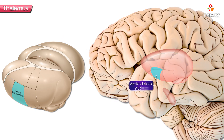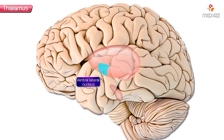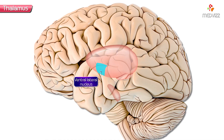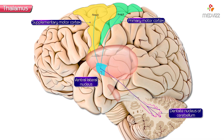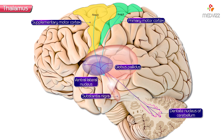Next is the ventral lateral nucleus. This ventral lateral nucleus relays information between the primary cortex and the supplementary motor cortex, and also the dentate nucleus of the cerebellum. It also receives inputs from the globus pallidus and substantia nigra. It projects to the motor cortex — Brodmann area 4 — and the supplementary motor cortex — Brodmann area 6.